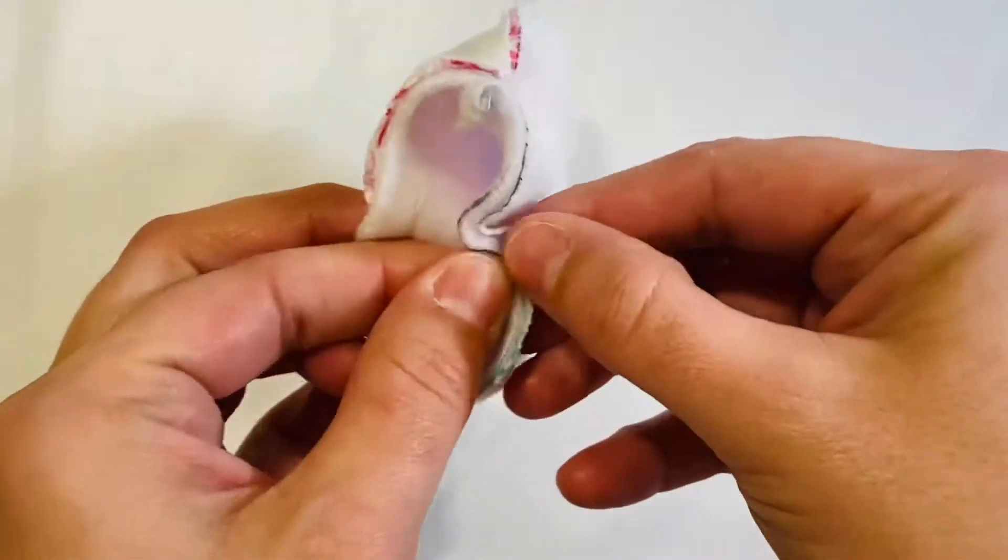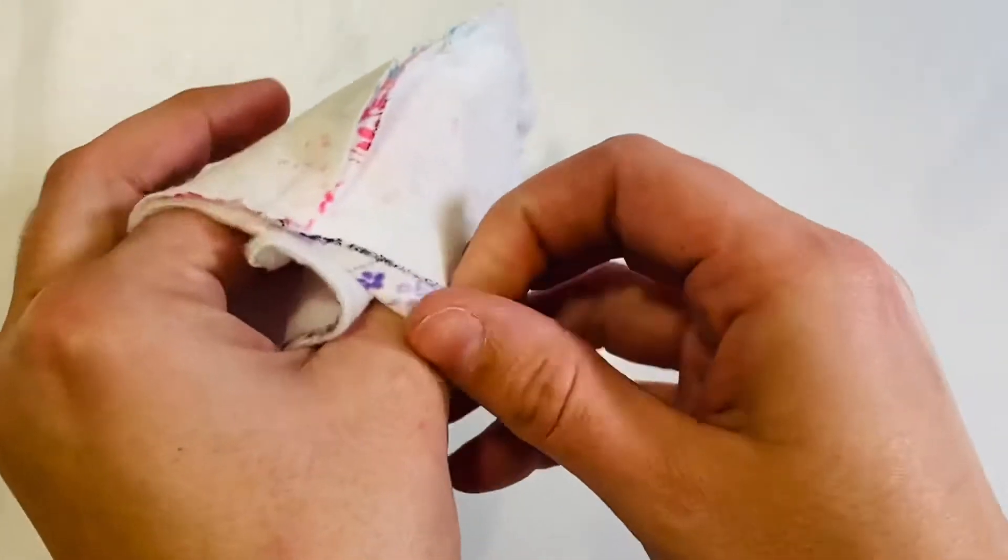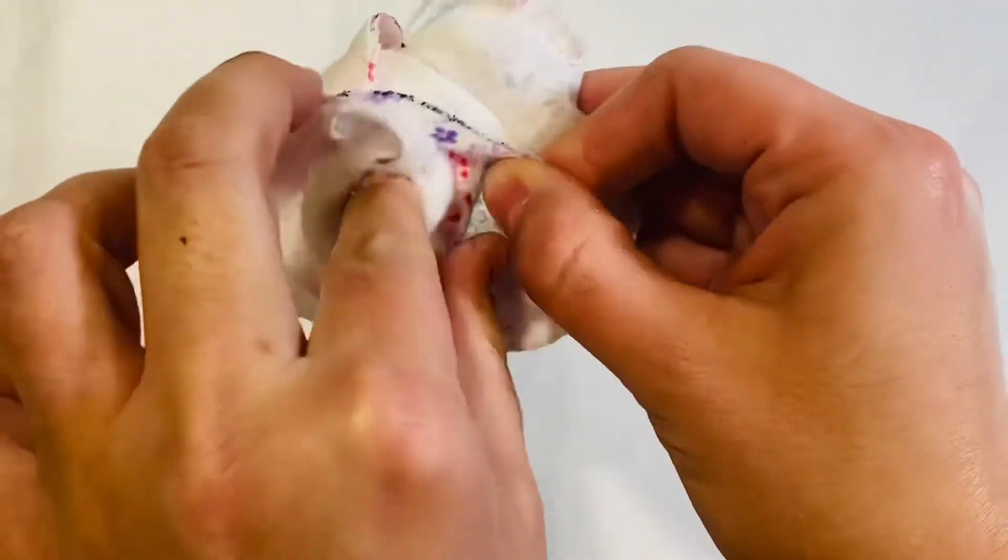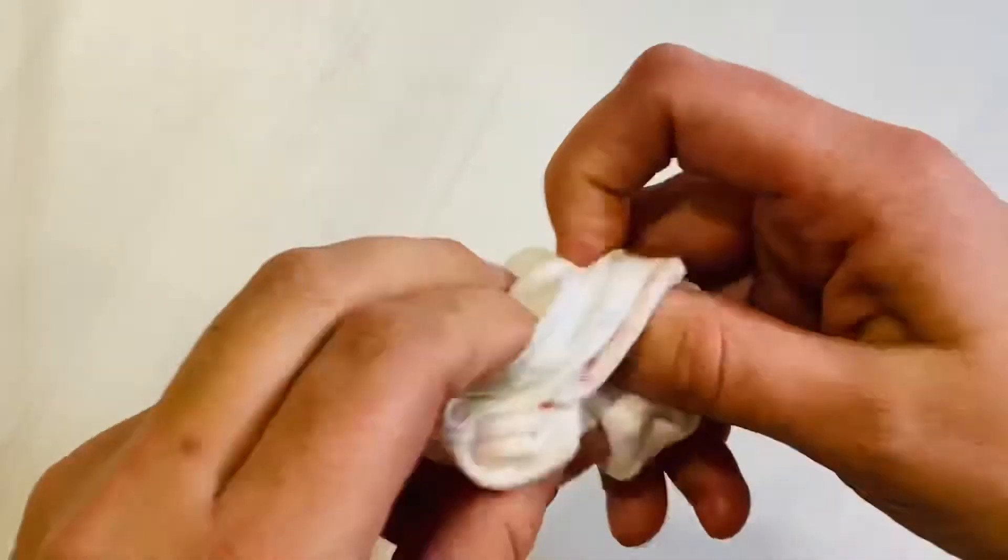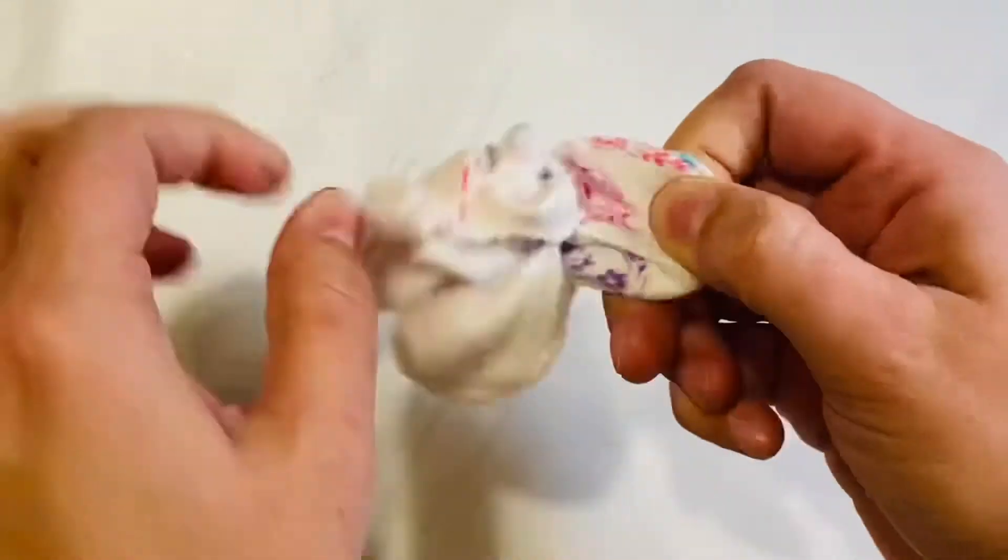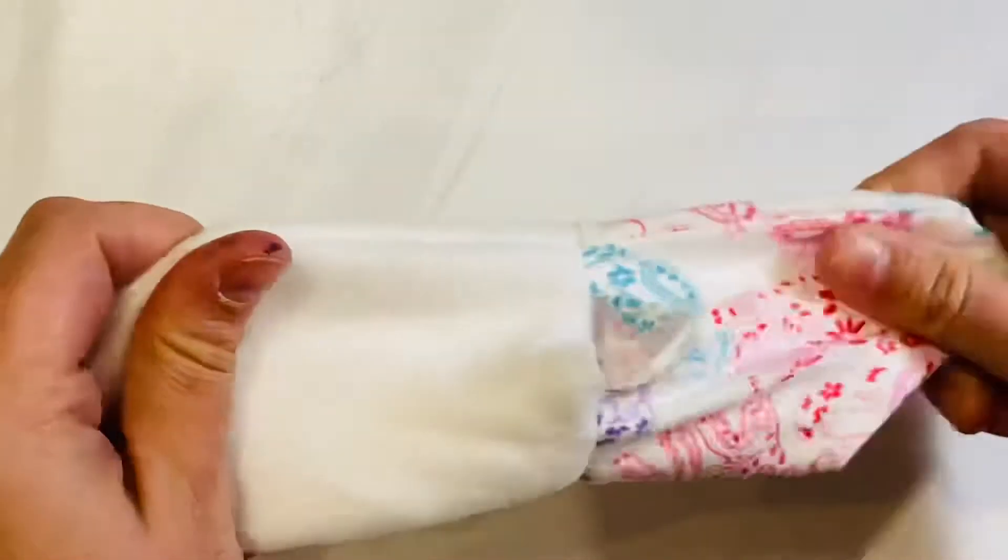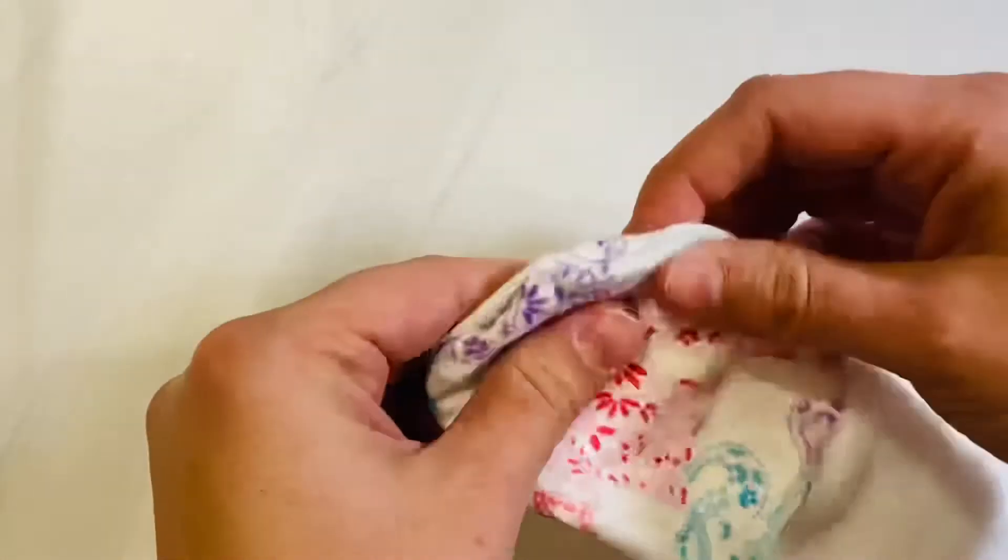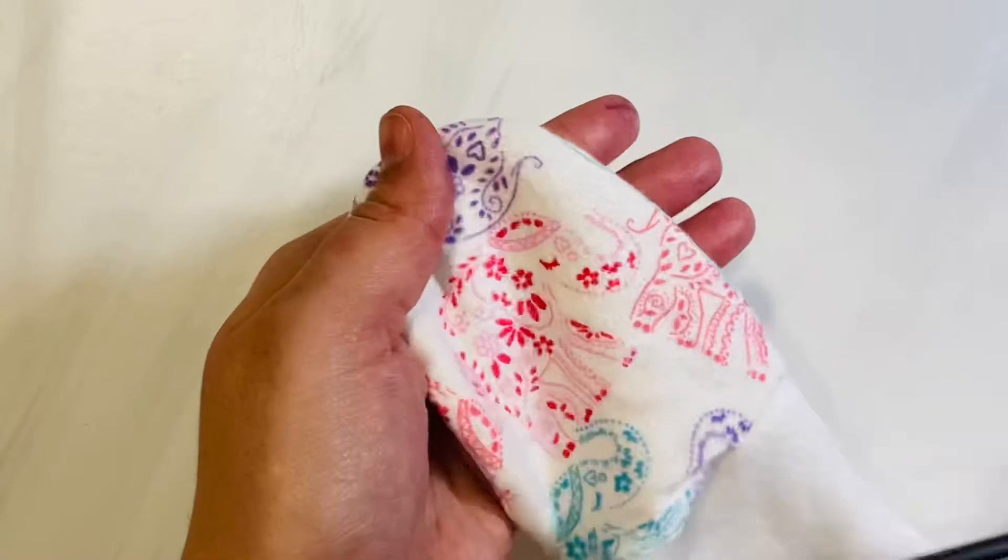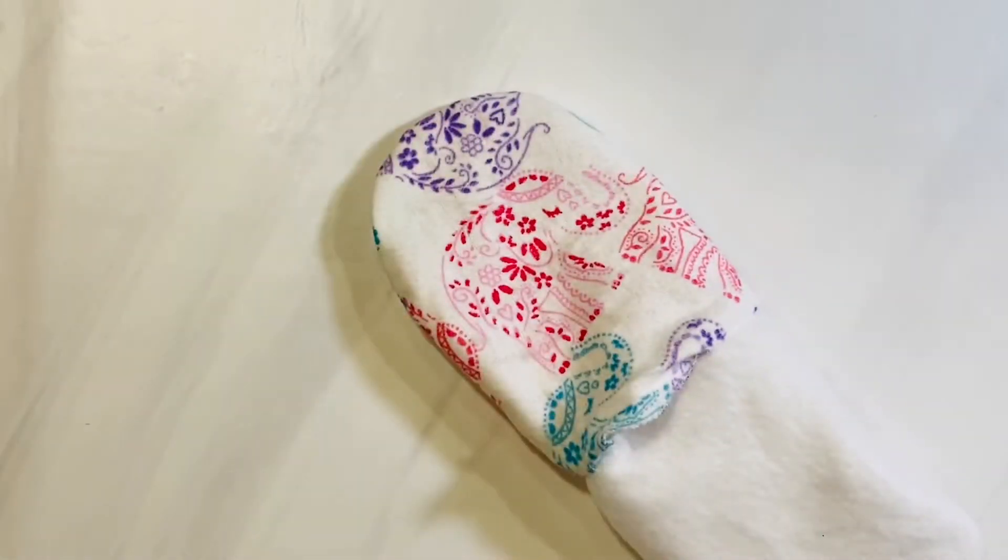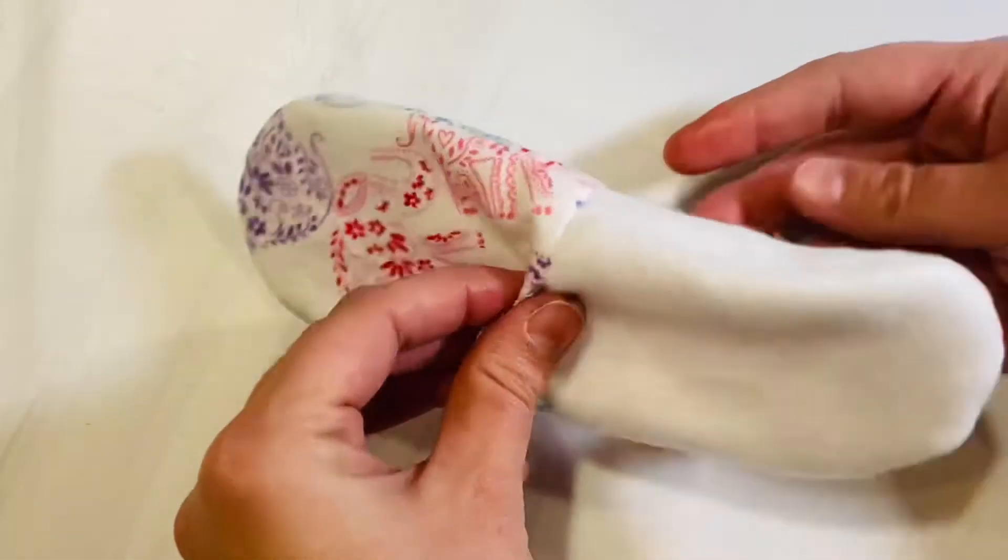Now you're going to go to the opening that you did not sew and you're going to flip your fabric right side out. Just pull until it's all through the gap at the opening there, and then you're going to smooth out and poke out all of your seams so that it looks nice and crisp at all your seams. Again, I like to use a chopstick in my everyday sewing. If you don't have them, I suggest getting some.